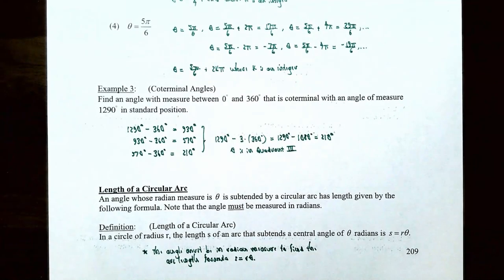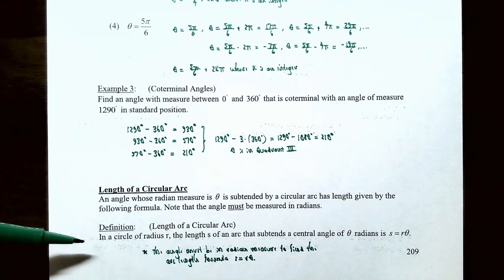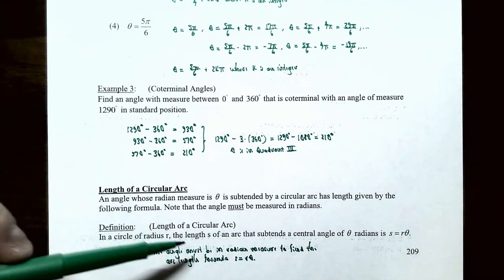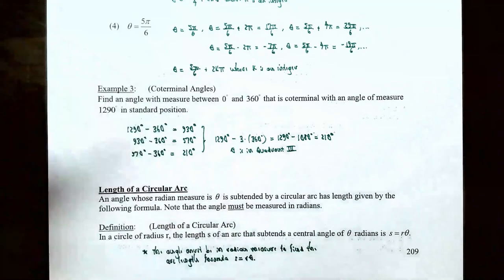Now let's talk about the length of a circular arc. An angle with radian measure theta subtends a circular arc with length given by the following formula — note the angle must be in radians. If a circle has radius r, the length s of the arc that subtends a central angle theta in radians is given by s equals r times theta.